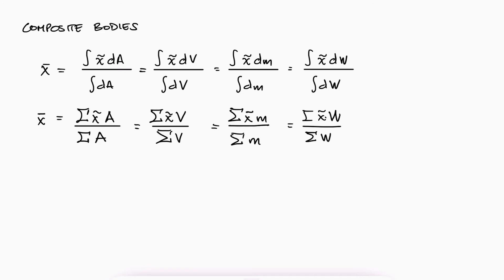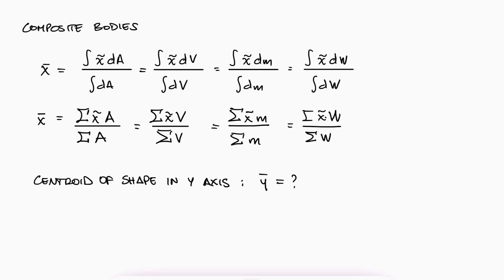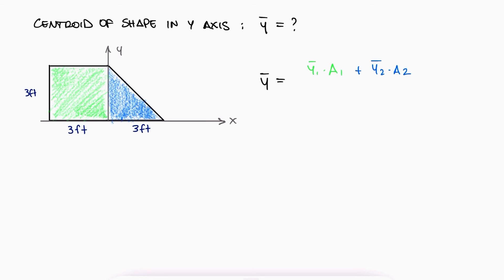For example, if we are trying to find the overall centroid in the y axis, meaning y bar, of a shape that is formed by a square and a right triangle, y bar would be equal to y bar times area of each shape, added together, over the sum of the areas in the denominator. The centroid of the square is right in the middle, h over 2, and the centroid of the triangle is found at h over 3.